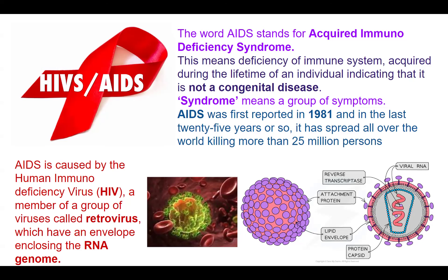AIDS is not spread simply through coughing or sneezing. AIDS is caused by the Human Immunodeficiency Virus, or HIV. This HIV virus is a retrovirus, meaning it has reverse transcriptase. Normally, DNA produces RNA which transcribes into protein. But in a retrovirus, the RNA produces DNA — this is reverse transcription — and then the protein is formed.